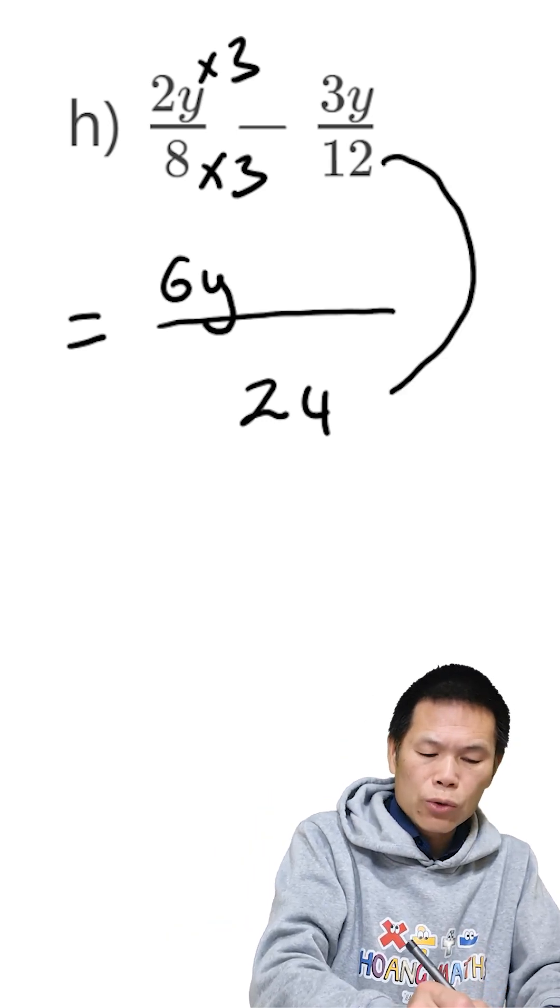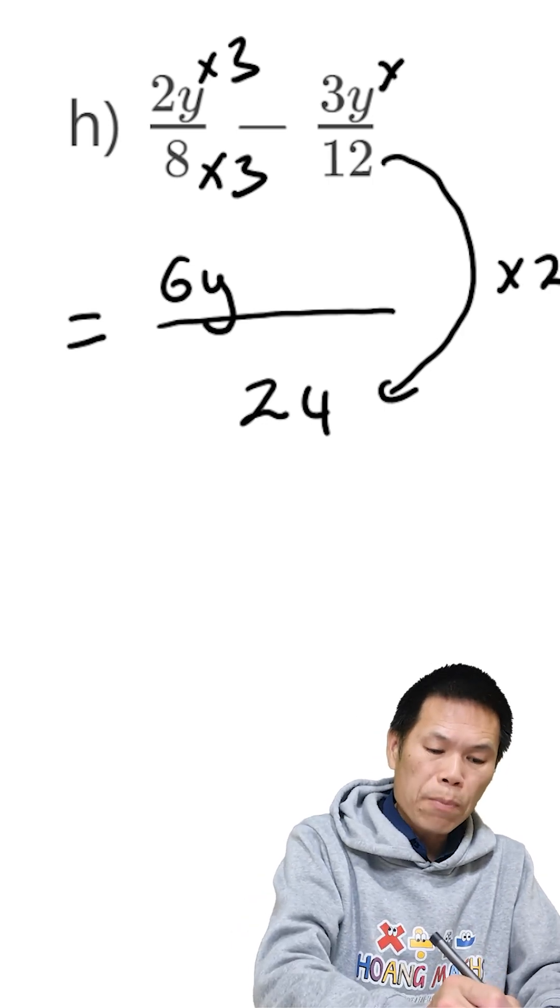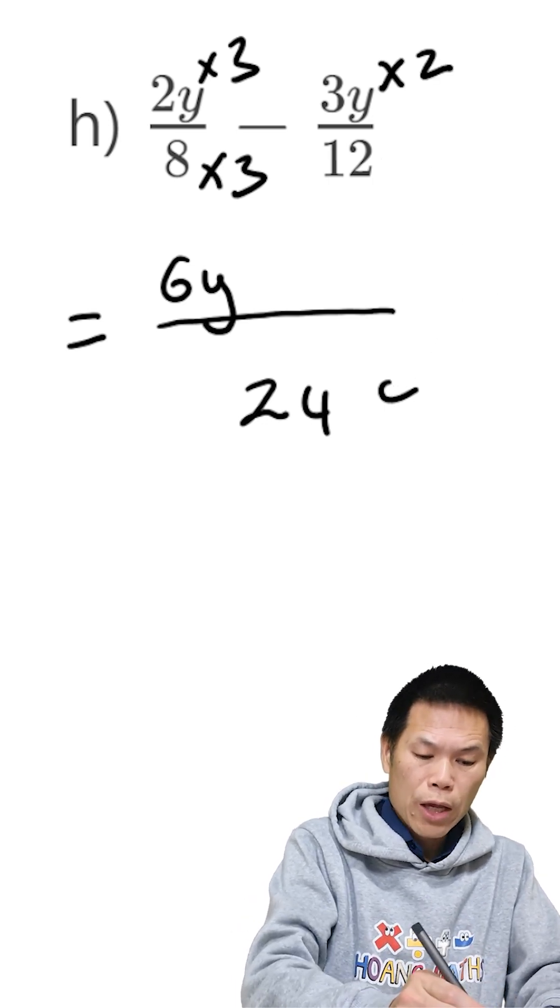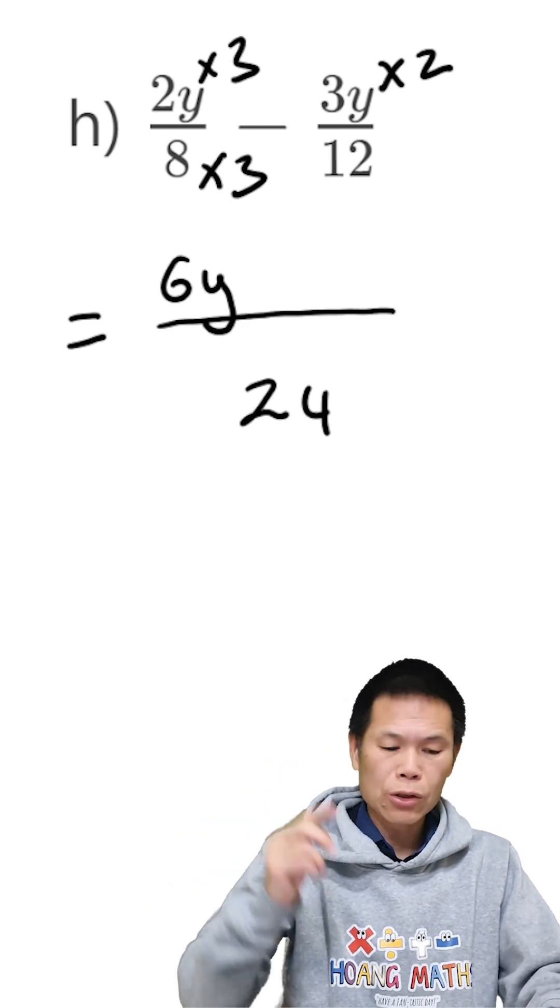And to get 12 to 24, we times 2. So therefore, the top, we times 2 as well. So 3 times 2 gives me 6. So 6y.